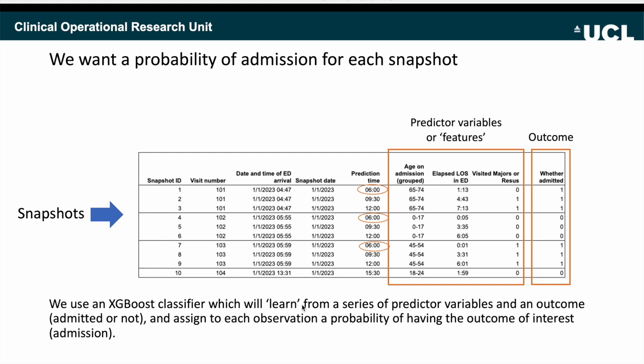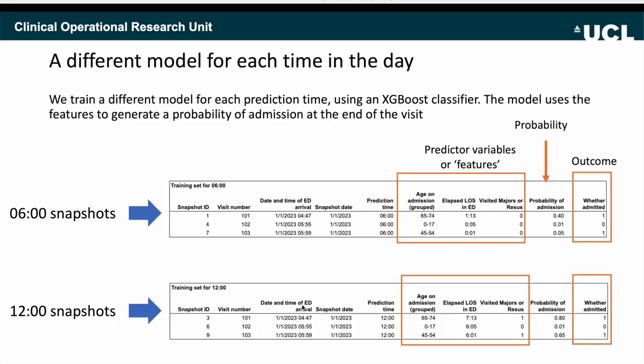We also have multiple times of day when we observe visits, and we actually train a model separately for each time of day, because the nature of presentations may be somewhat different. At 6am we're more likely to have patients who've stayed in all night waiting for admission to beds; at midday we're more likely to have patients in for urgent treatment type care who are less likely to be admitted. Since we have plenty of data we took the decision to train one model for each time of day.